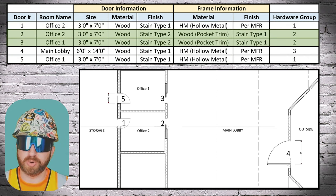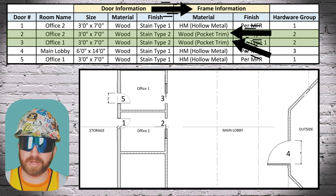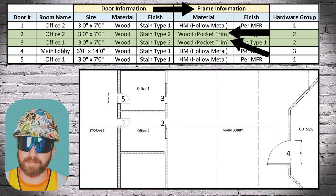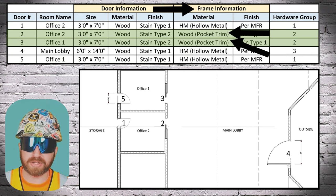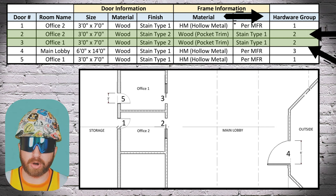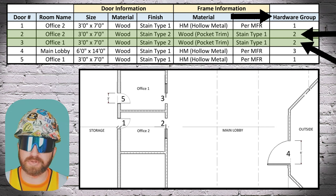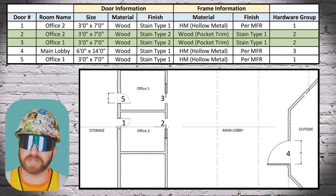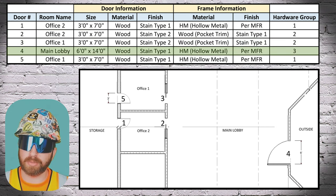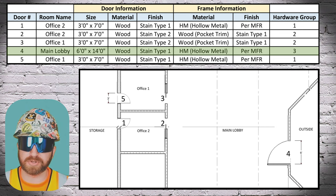Door number two and door number three are wood frame pocket doors with hardware package number two — both of those are the same as well. And door number four is a large six-foot-wide by fourteen-foot-tall door with hardware package number three.